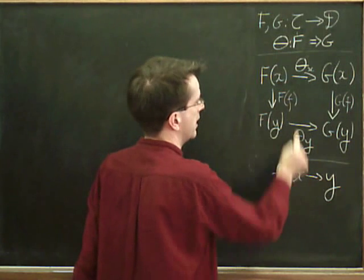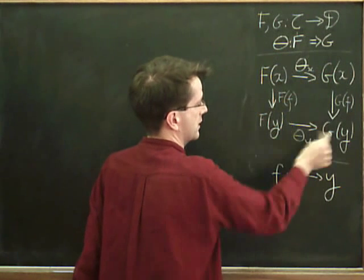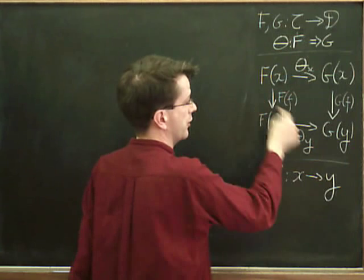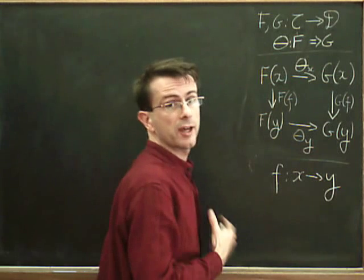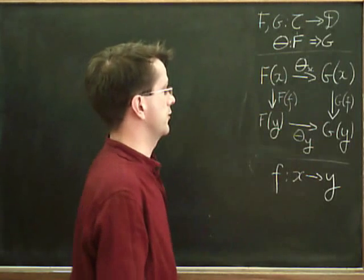then I get a naturality square. So this will give me a morphism from F of X to G of Y in two different ways. I can make it in two different ways and they have to give me the same answer. So that's what a natural transformation is, that data satisfying those conditions.